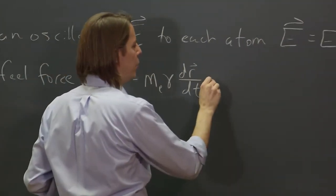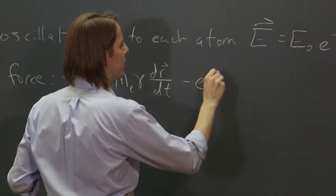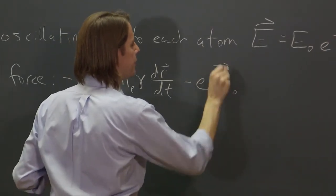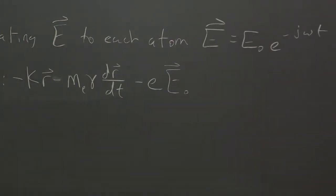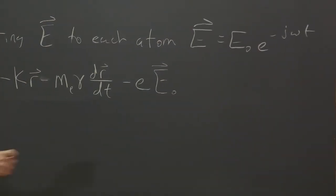Another term, then, would be minus the electron charge times E naught. And that's just the driving force from the incident light. E to the minus j omega T.